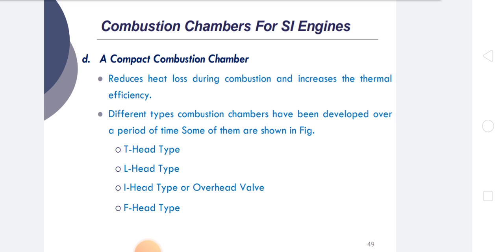Good scavenging arrangement is needed to expel products of combustion that may remain in the clearance phase. The combustion products remaining in the clearance phase should be expelled out of the combustion chamber. This can be accomplished with minimum or no short-circuiting of the fresh charge, which would otherwise reduce the time for expelling the remaining combustion mixture. All these criteria must be considered while designing the combustion chamber of an SI engine.